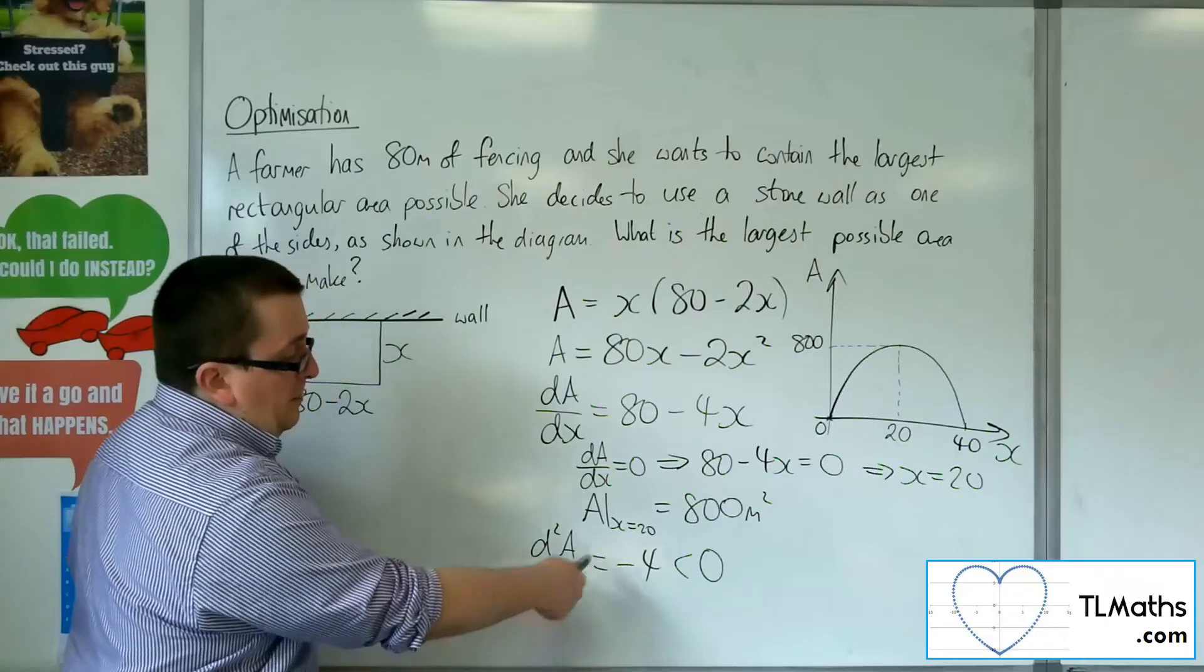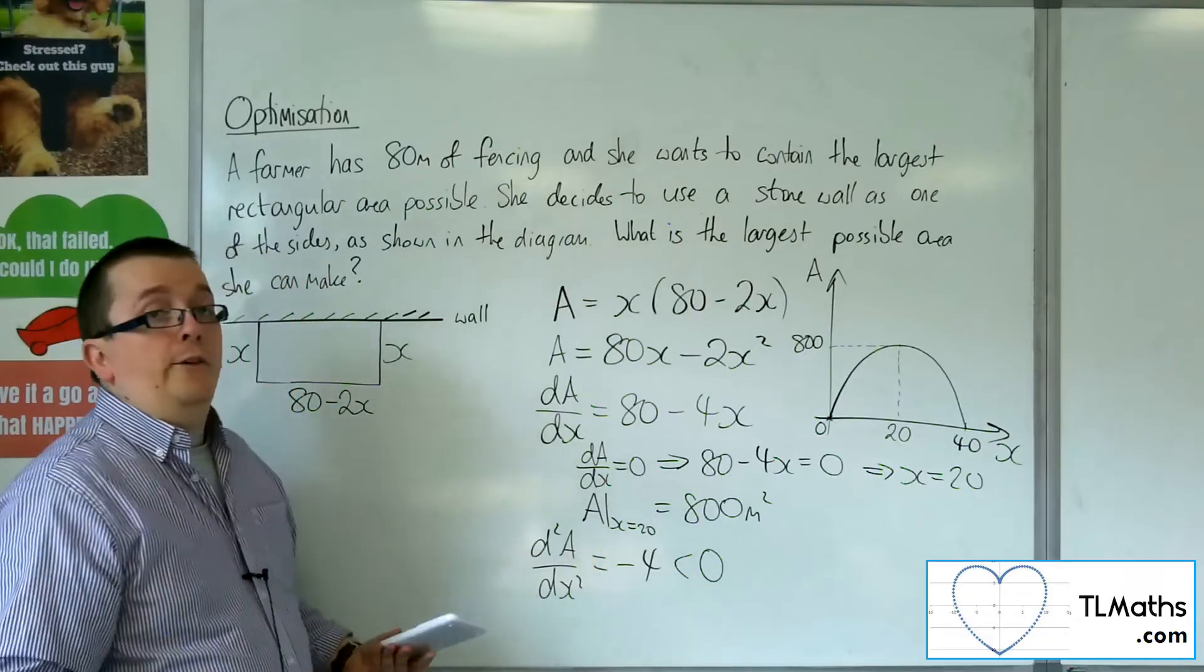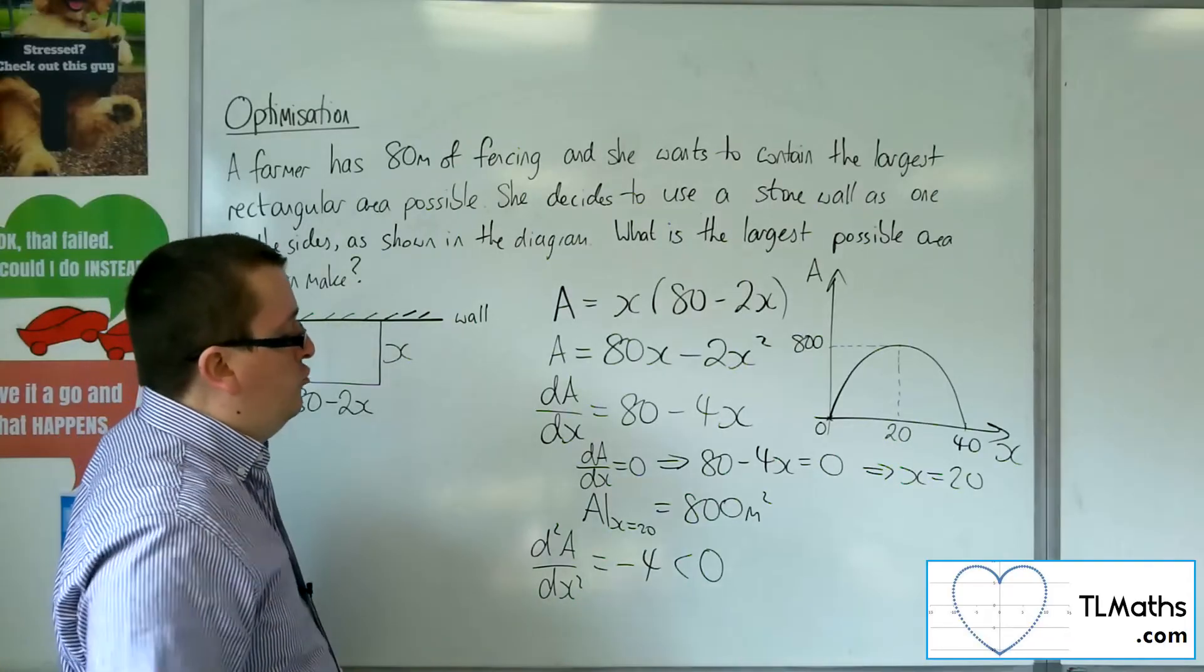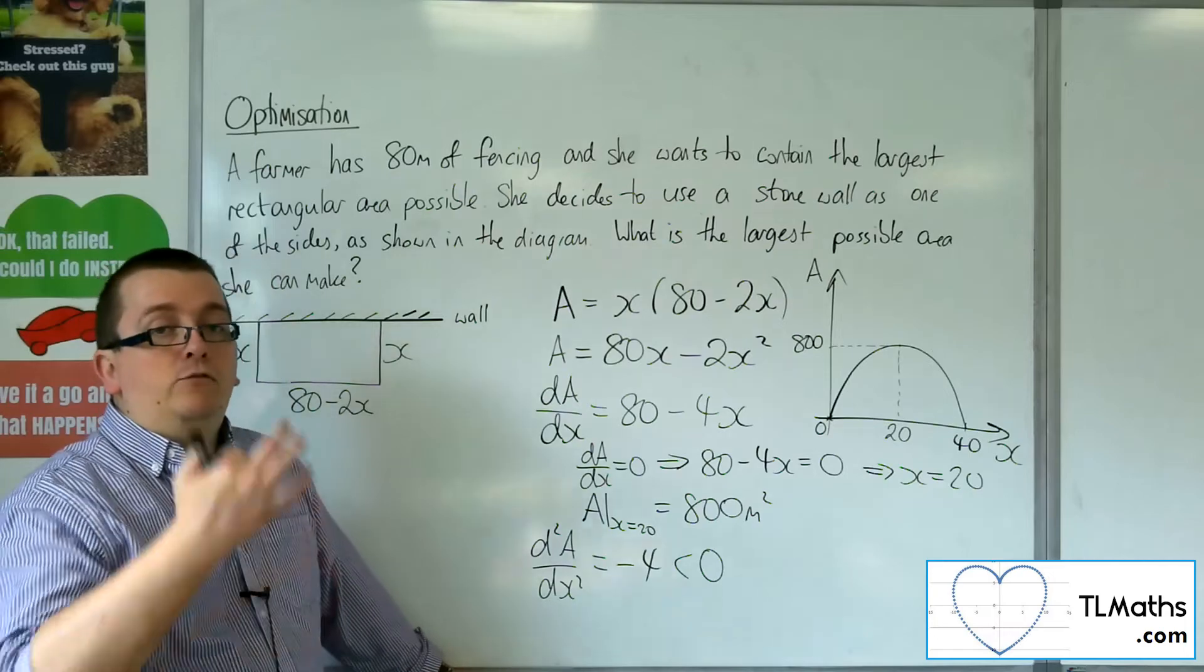So that means that, even if I can't really just substitute in x is 20 into that, because there's no x there, it is minus 4. And so that stationary point will be a local maximum, because you've got a negative result there.